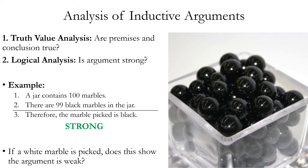Consider a case where the premises are true, yet we pick a white marble. Would this show the argument is actually weak? The answer is no — the argument is still strong even if the conclusion turns out to be false. A strong argument does not guarantee the conclusion based on the premises, which means it's always logically possible, even in a strong argument, that the conclusion is false. The argument still counts as strong with a false conclusion, as long as the premises do make the conclusion probable. Remember that probable, even highly probable, is not absolutely certain.